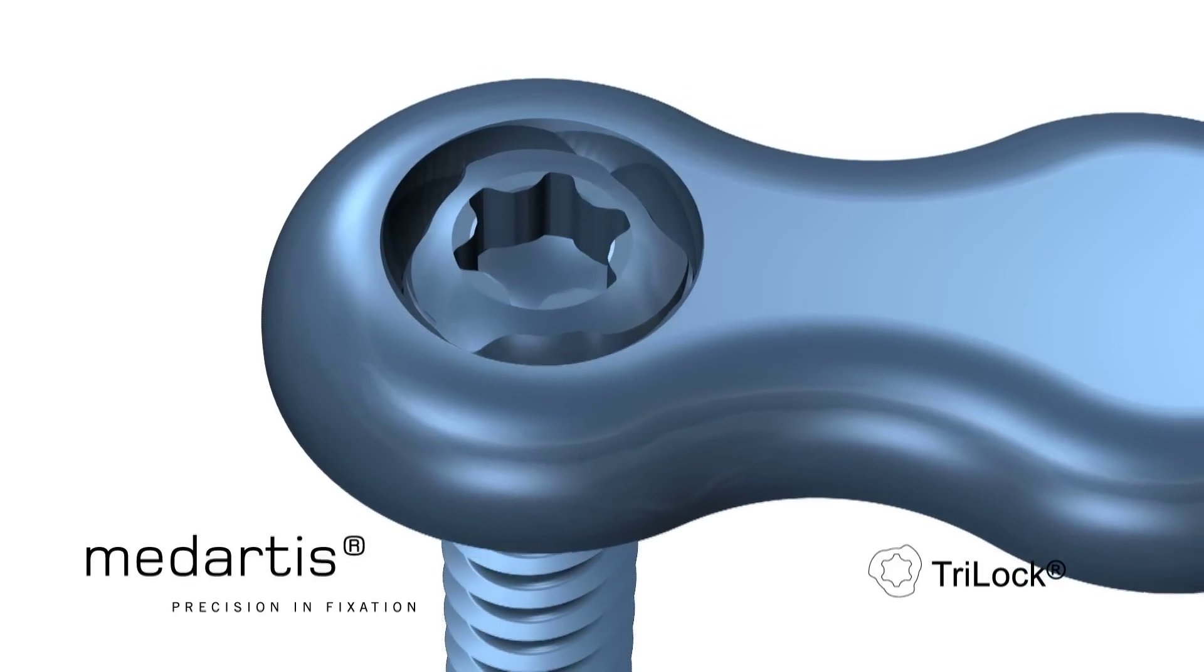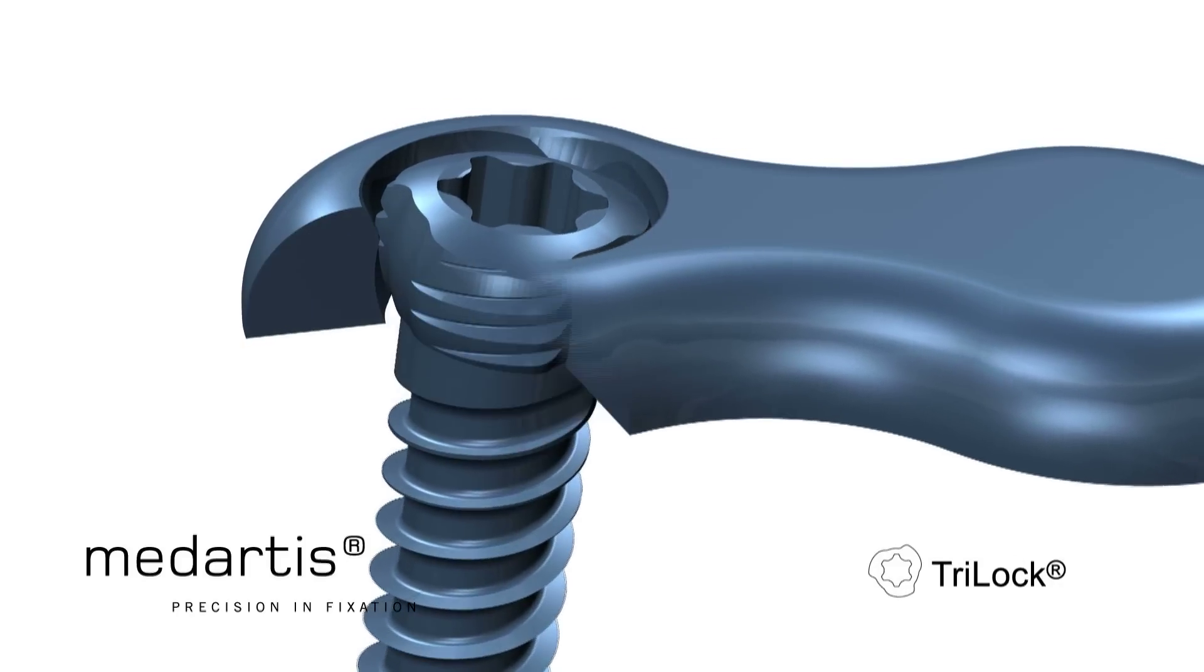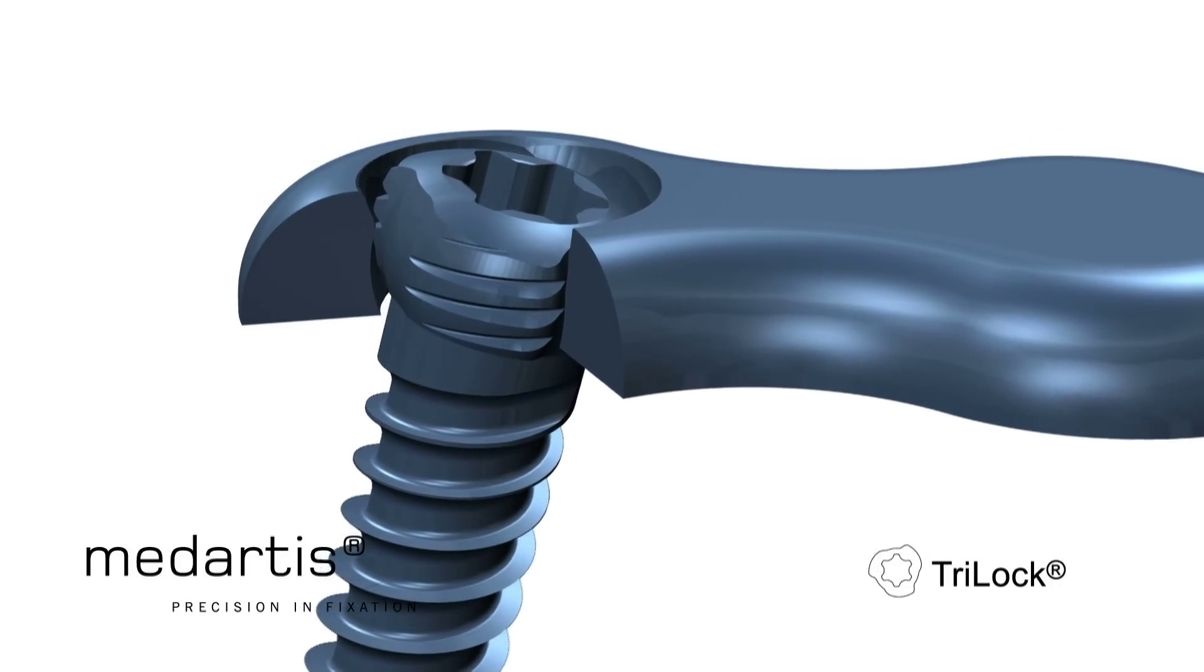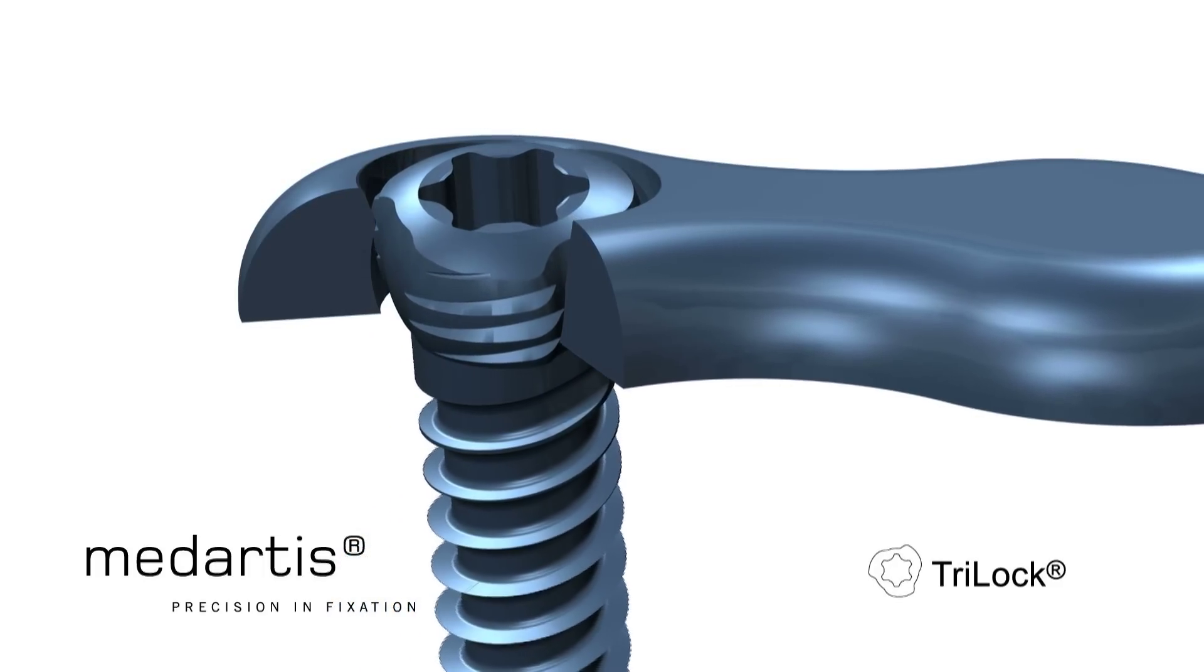Due to the spherical head geometry of the screw, any user-defined screw angle within the angular range of ±15 degrees can be permanently locked. The screw head protrusion is very small, even in the maximal swivelled state.